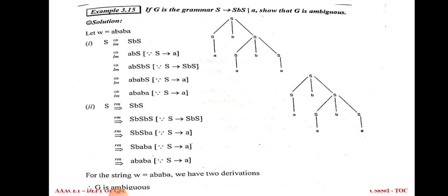For a given grammar, you can check whether it is ambiguous using derivation or parse trees. You can derive the input string using leftmost or rightmost derivation, or construct the derivation tree to verify ambiguity.